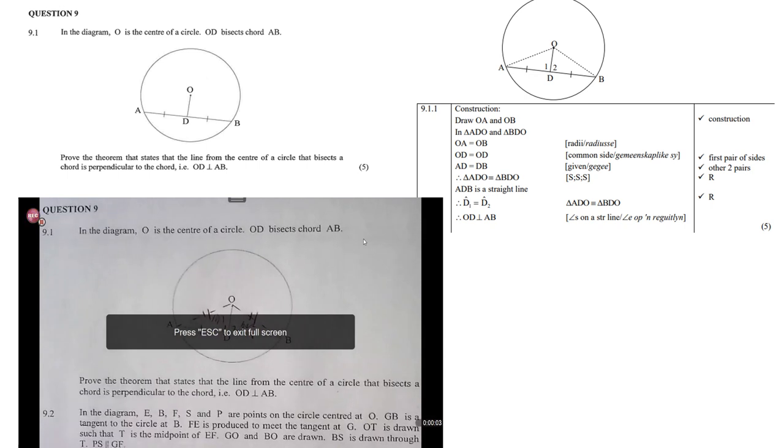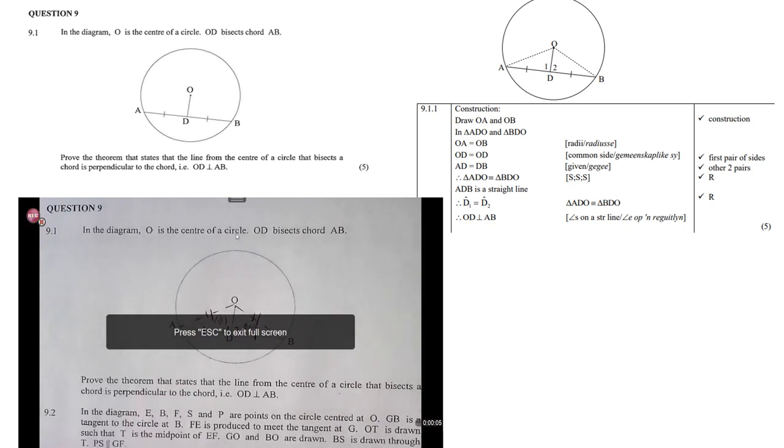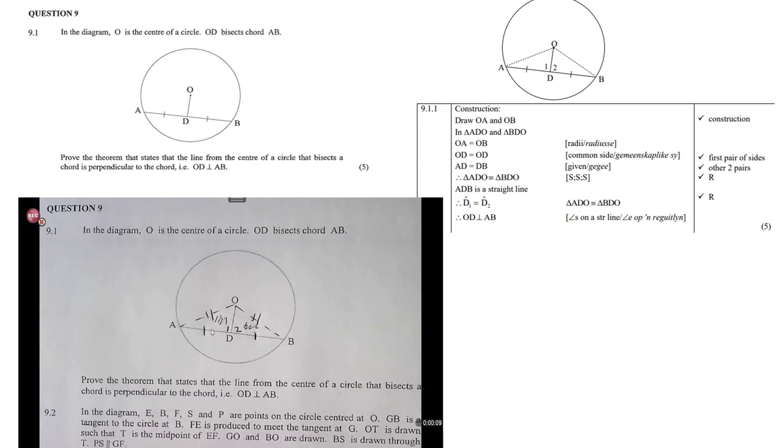Question 9.1, in the diagram, O is the center of the circle, OD bisects AB. So, that means AD and DB are equal. So, we must prove that OD is perpendicular to AB. In proving that, I will have to prove that D1 and D2 are equal. Because if they are equal,